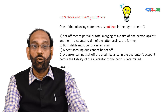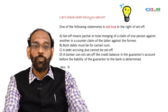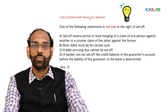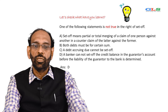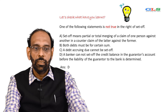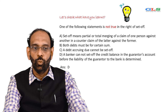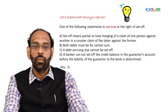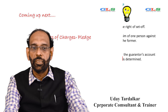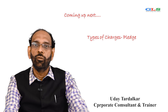Another question: one of the following statements is not true about the right of set-off — identify which is not true. The options include: set-off means partial or total merging of a claim; both debts must be for a certain sum; a debt not yet due cannot be set off; a banker cannot set off the credit balance in the guarantor's account before the liability of the guarantor to the bank is determined. The answer is D — that statement is not true. That completes this session; in the next session we'll cover pledge.